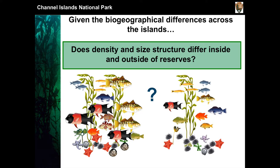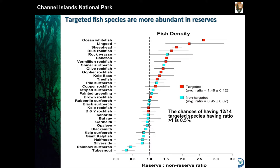This chart looks complicated but it's actually pretty easy. This is a ratio of greater than one versus less than one. If you're greater than one, you're more abundant inside the reserve. If you're less than one, you're less abundant inside the reserve. If you're red, you're a species that's targeted or fished. If you're blue, you're a species nobody harvests — nobody really wants sea stars. You can see there's a much higher proportion of fish that are more abundant inside the reserve than outside. We're in the process of redoing this with more data, but the trends are pretty much the same.